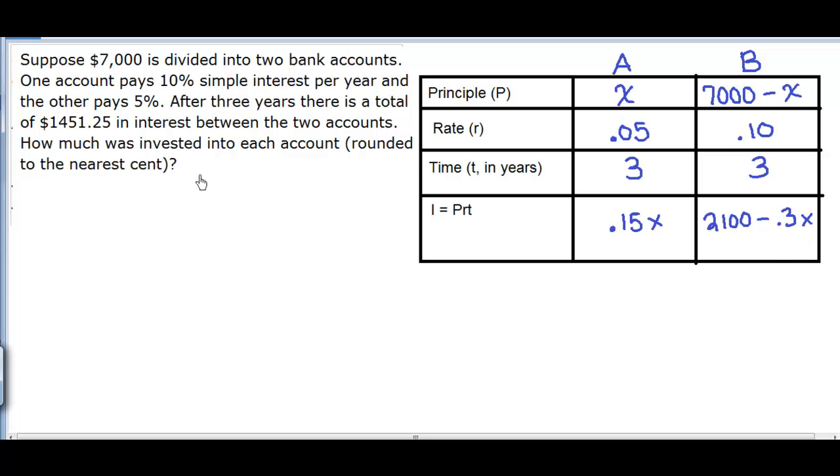So the next part we need to pay attention to is the total amount that they had in interest for the two accounts. When you look at the table, that last line, the interest, we're going to add those two together to equal the total. So we'll have 0.15X plus the quantity 2,100 minus 0.3X equals 1,451.25.